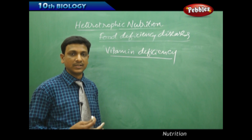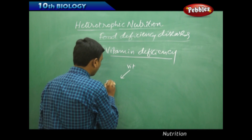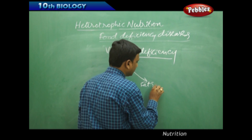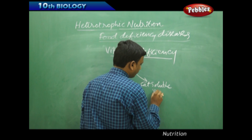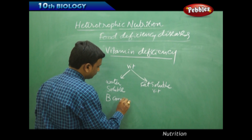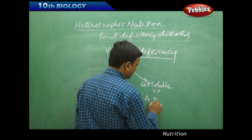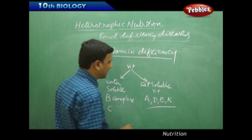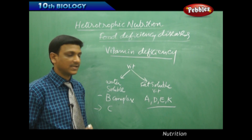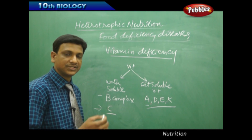Vitamins are to be taken in the food and are categorized according to their solubility. Vitamins are divided into water-soluble vitamins and fat-soluble vitamins. The vitamins soluble in water are vitamin B complex and vitamin C. Vitamin A, D, E and K are fat-soluble vitamins. Deficiency of any of these vitamins leads to deficiency diseases. For example, deficiency of vitamin C leads to scurvy, and deficiency of vitamin A leads to night blindness.